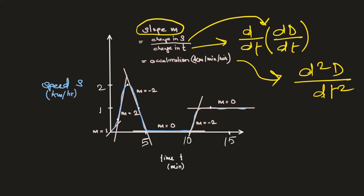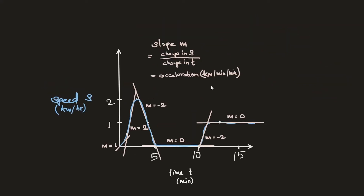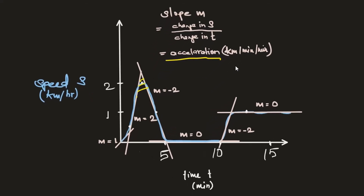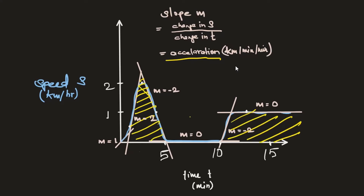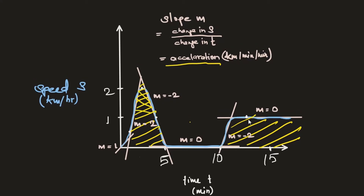We have seen the idea behind calculating the first and second order derivatives. Now let's shift into integral calculus, which is pretty much correlated to what we've been discussing. We know that the second order derivative represents acceleration. If we pay attention to this figure and observe the areas within these curves, these areas can also be represented as the total distance traveled.